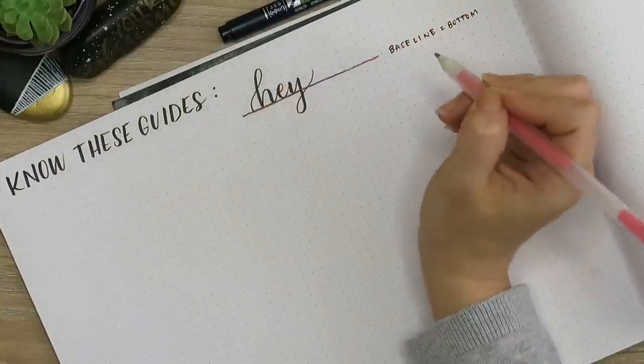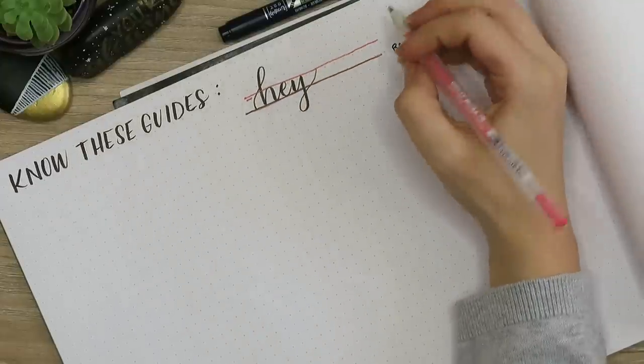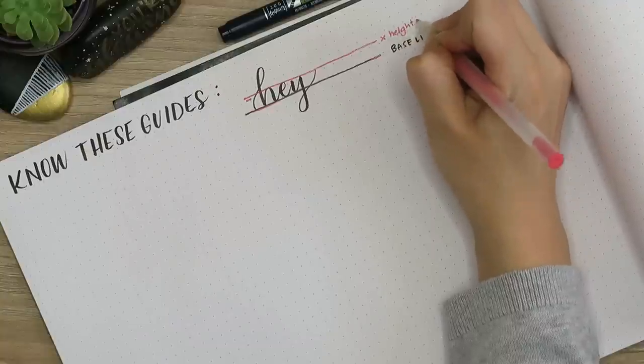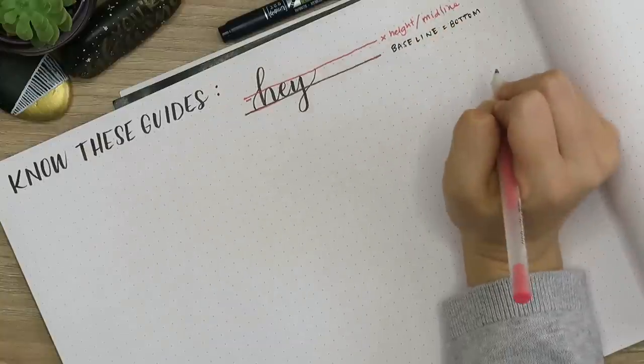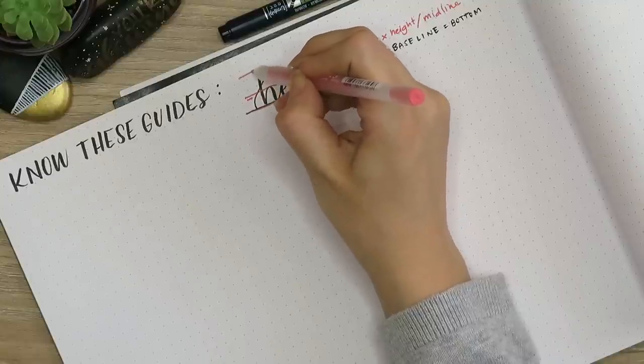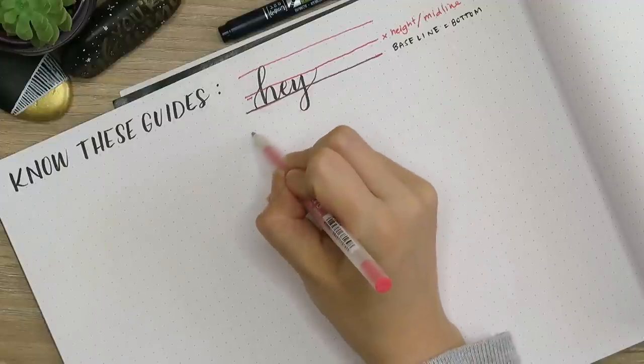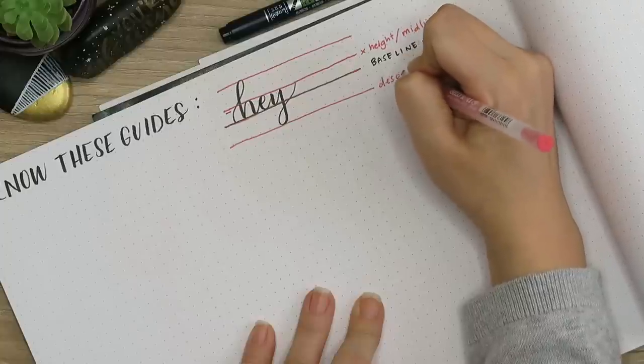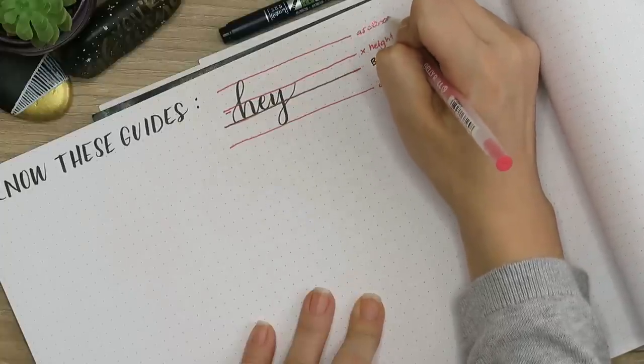The first line that you need to know is the baseline—that is obviously where the bottom of your letters sit. The next line that I'm drawing here is called the midline, also sometimes referred to as the x-height. This is going to tell you where your standard lowercase letter is going to hit. It got its name because it's where the lowercase X lies, but it's also going to be your C's, your A's, stuff like that.